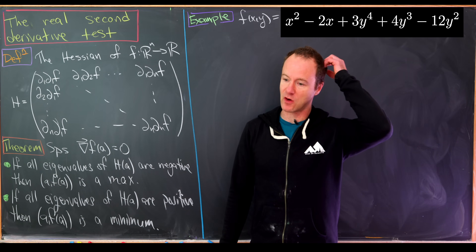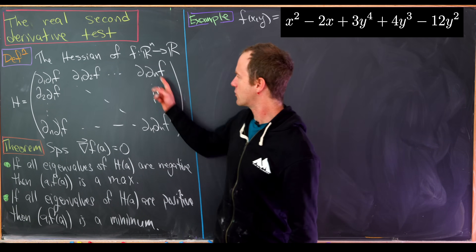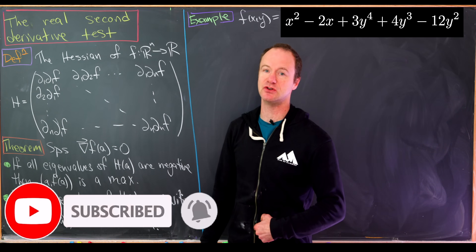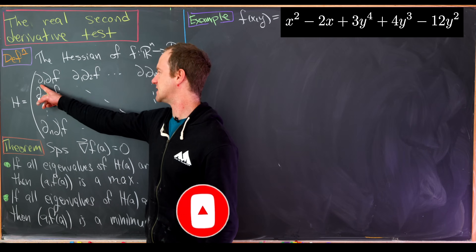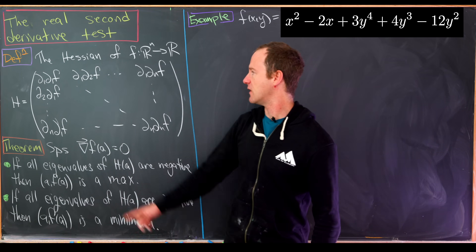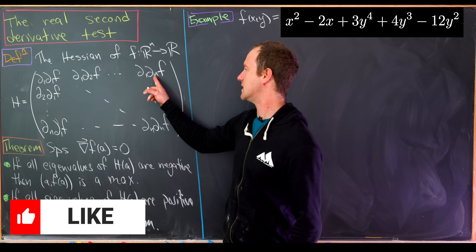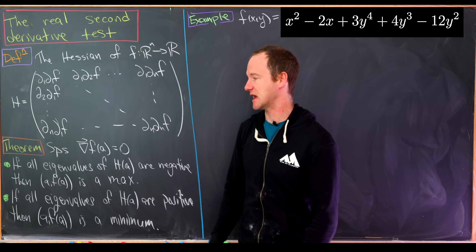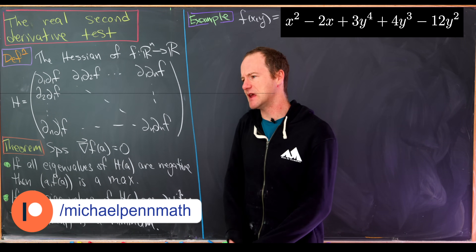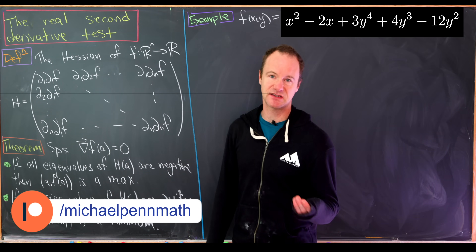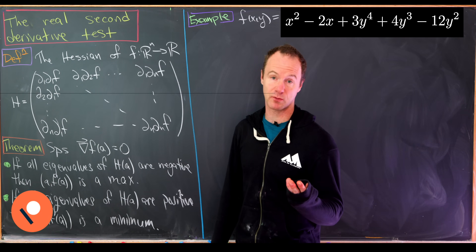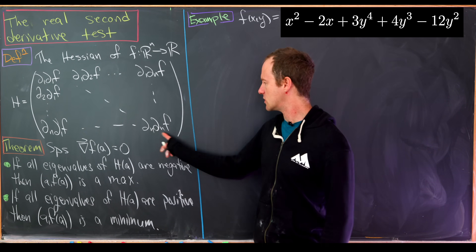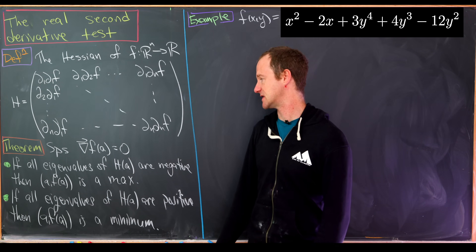This matrix is made up of all possible second derivatives of a function, grouped into an n×n matrix. The first entry is the second partial with respect to x_1, written ∂_1∂_1 f, then ∂_1∂_2 f, all the way to ∂_1∂_n f in the first row. Because of our niceness assumptions, this is a symmetric matrix — the order of partial differentiation doesn't matter — so ∂_n∂_1 f equals ∂_1∂_n f. The bottom-right entry is the second partial with respect to x_n.